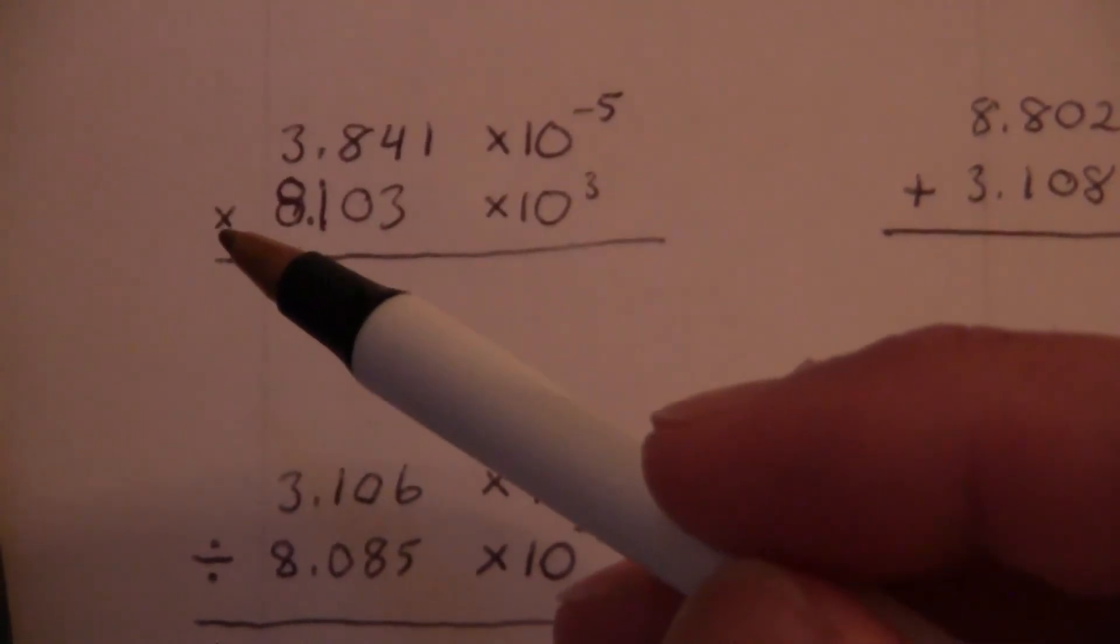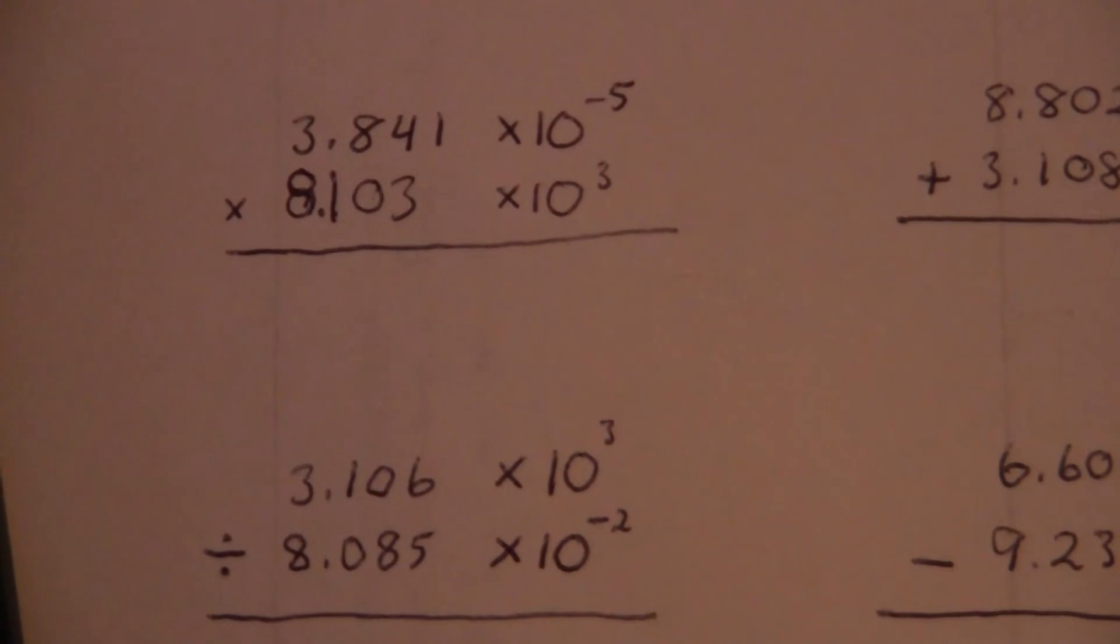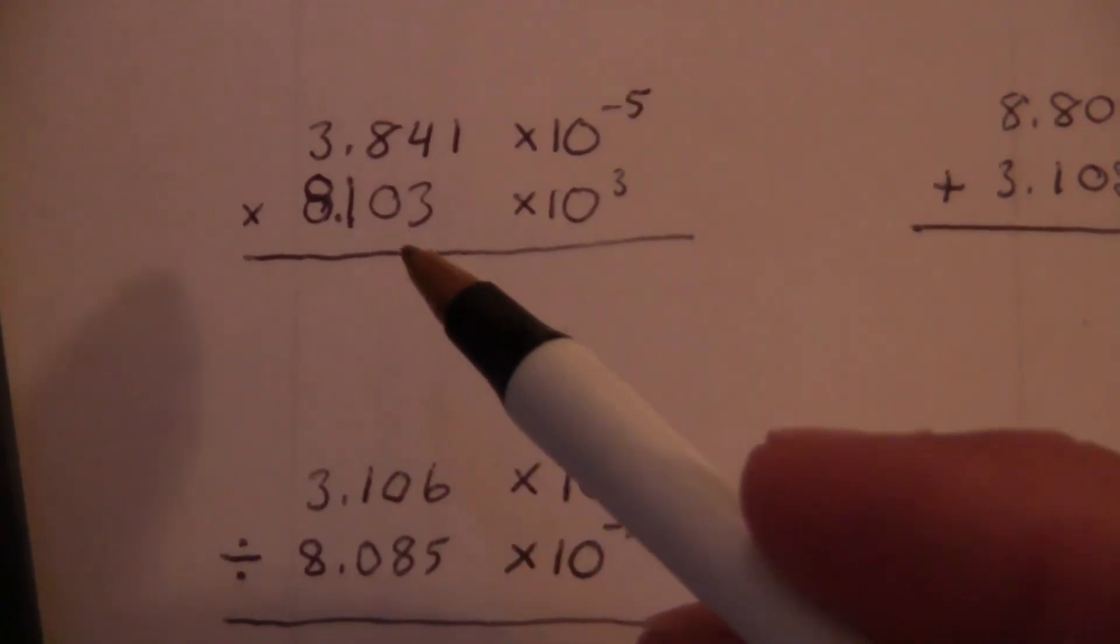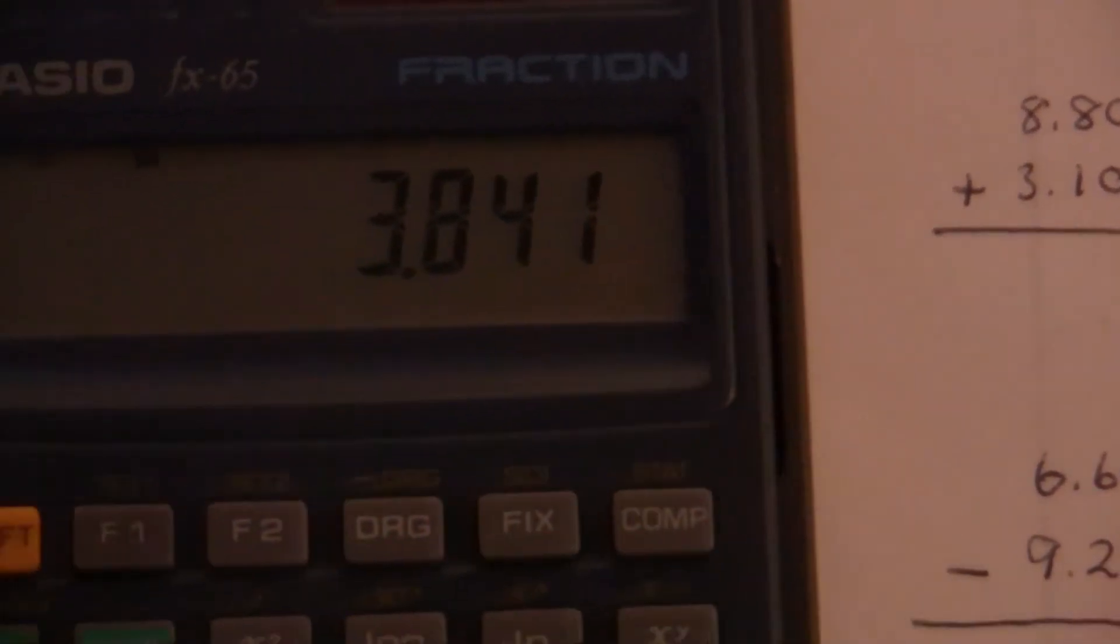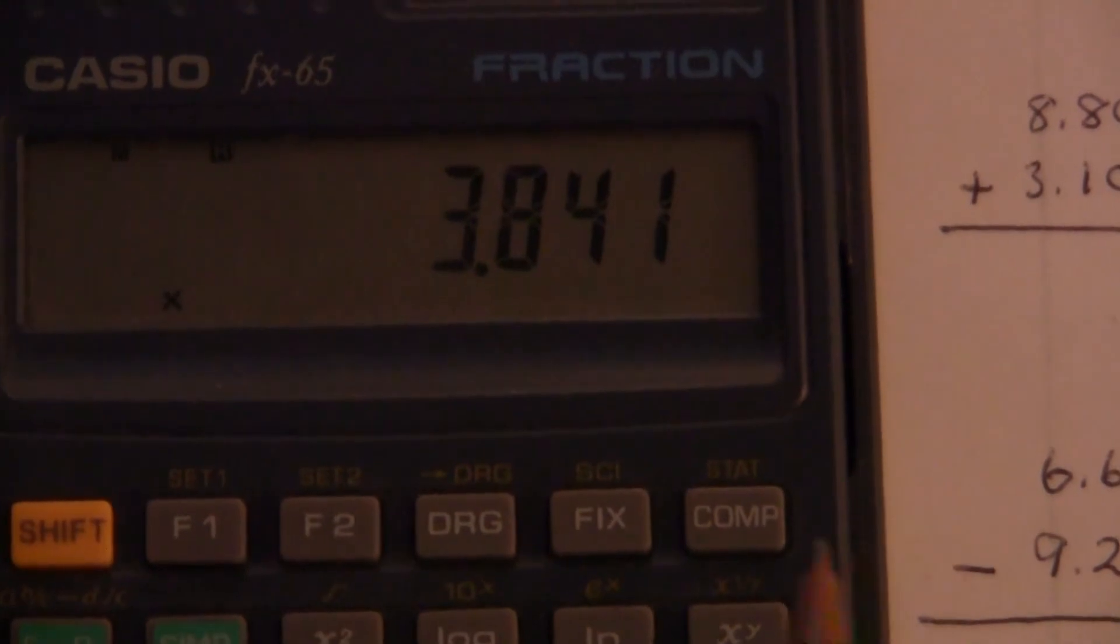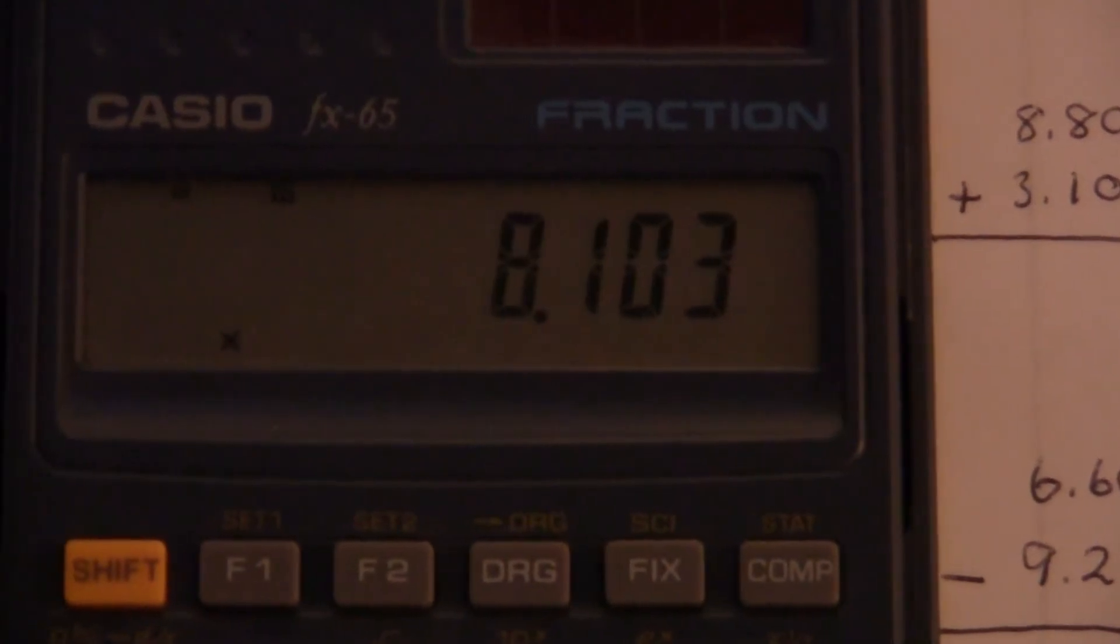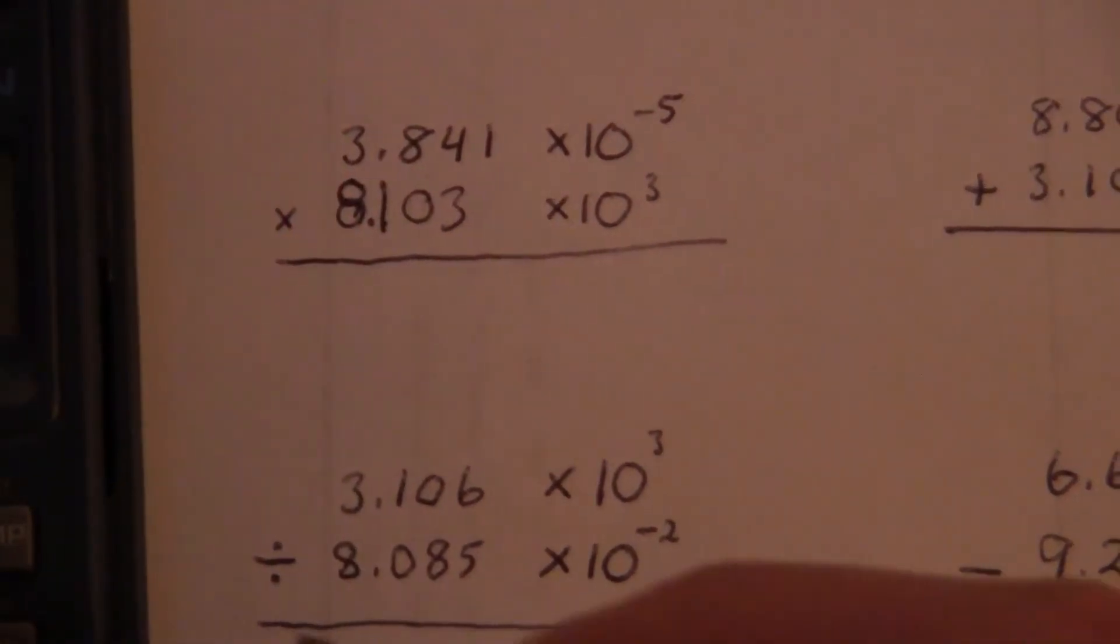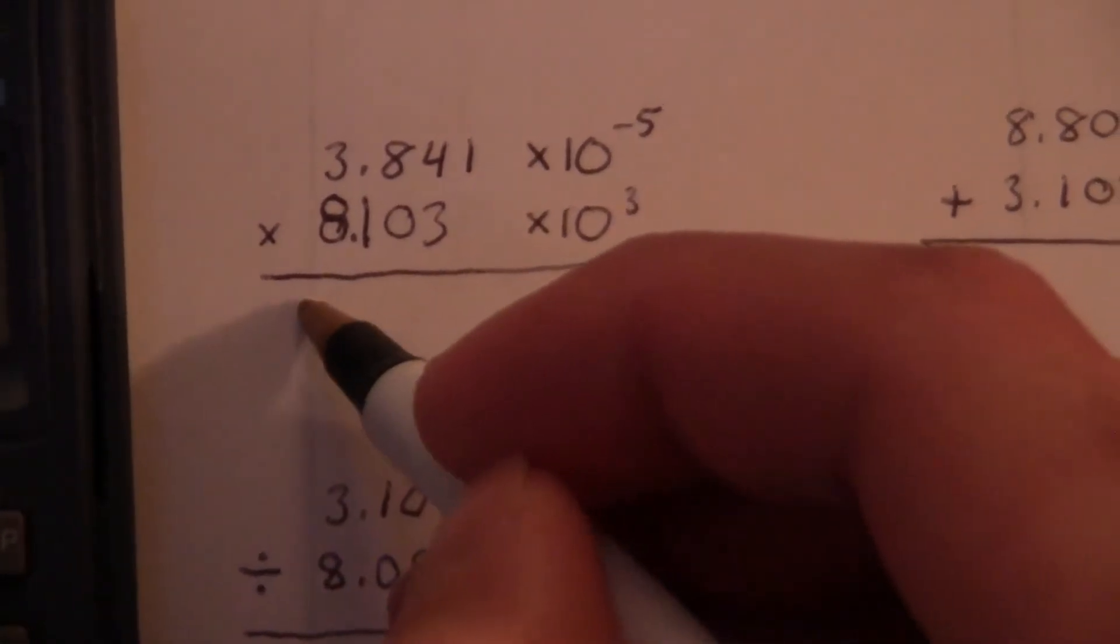So again we have multiplication 3.841 times 8.103. So 3.841 times, what was it? And there's a lot of numbers there. So I'm just going to round it off a little bit.